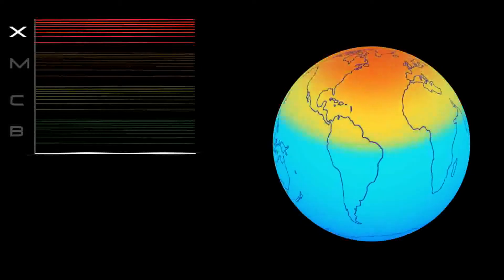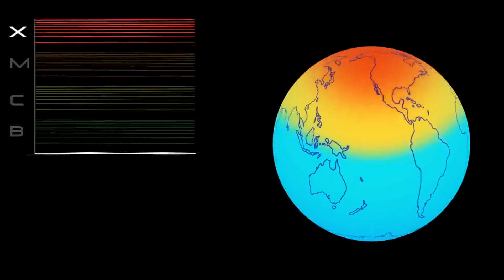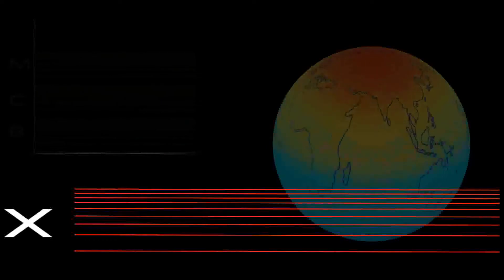It's the X-class flares that are the real juggernauts. Although X is the last letter, there are flares more than ten times the power of an X-1. So X-class flares can go higher than 9.